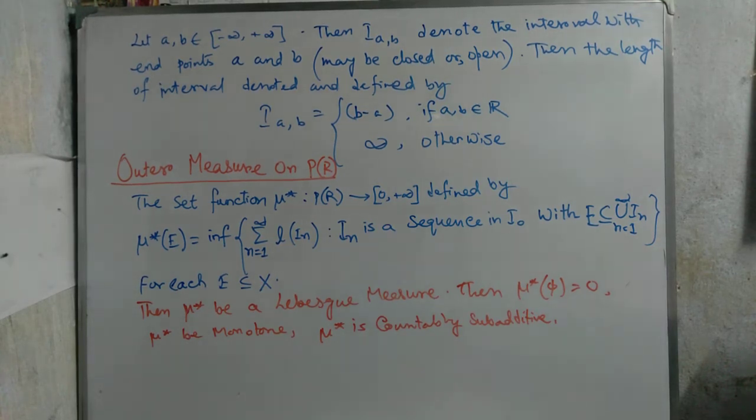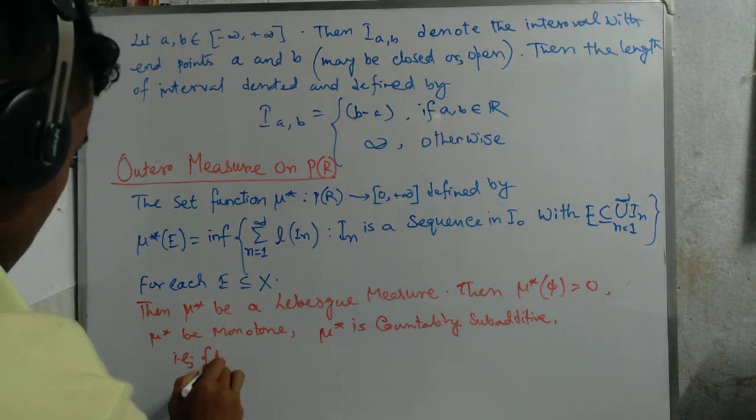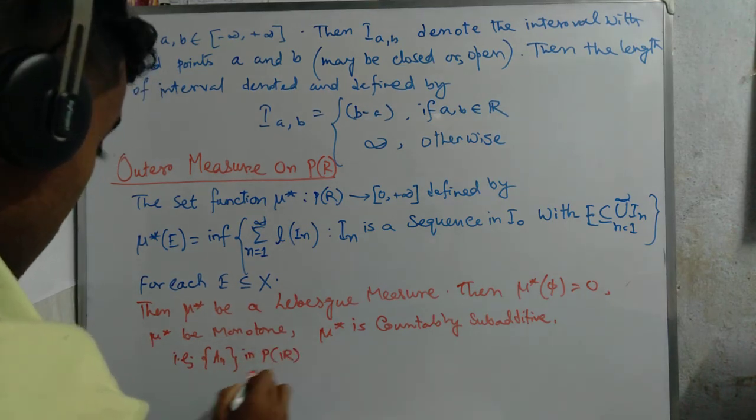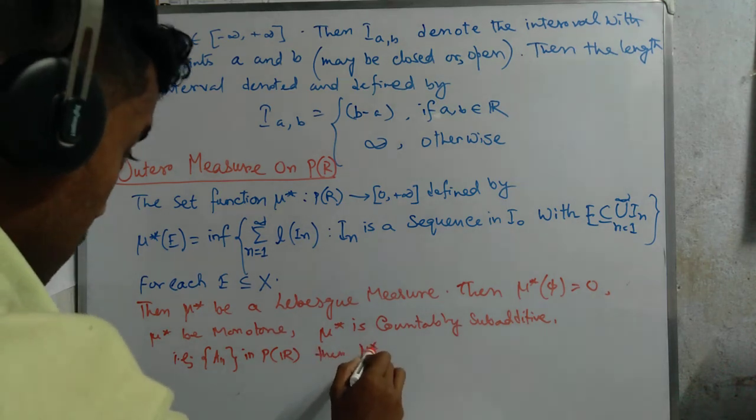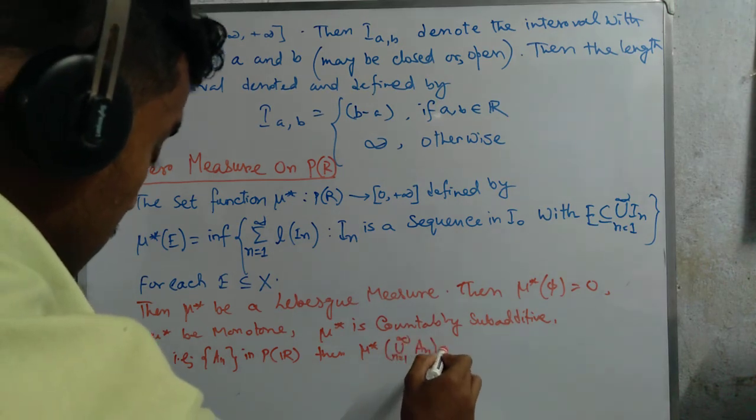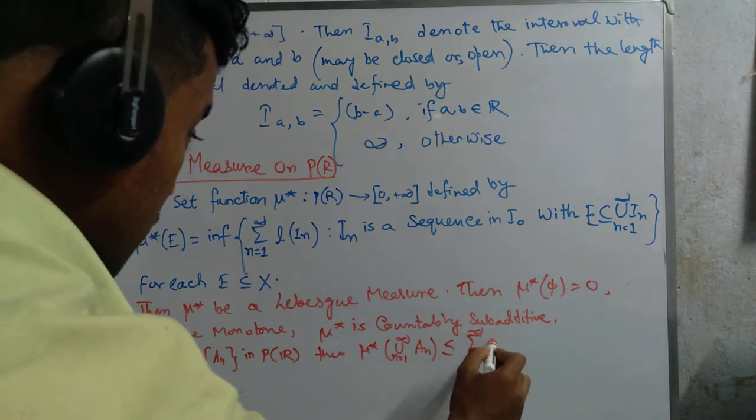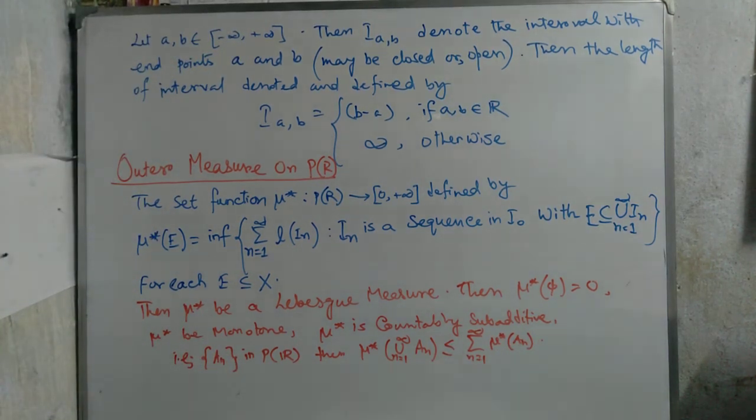Mu star is a measure, meaning that for some sequence {a_n} in PR, what happens is that mu star of union from n equals 1 to infinity of a_n is less than or equal to summation n equals 1 to infinity of mu star a_n.